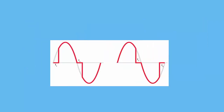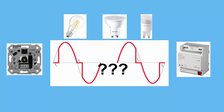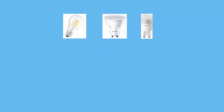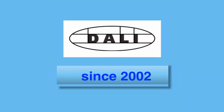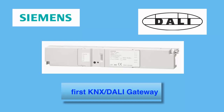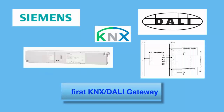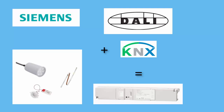Nowadays the challenge is bigger than ever, because energy saving lamps — mainly represented by LED lamps now — are very tricky to operate via analog dimmers. Since 2002 the DALI standard has been on the market. Siemens was the first manufacturer to develop a gateway between KNX and DALI, combining the benefits of a worldwide standardized field bus system with those of a digitalized lighting control system.